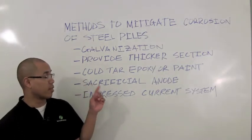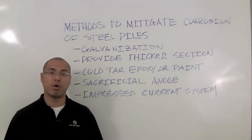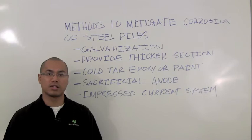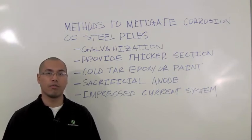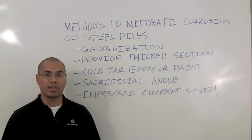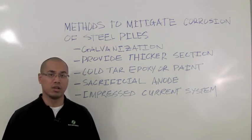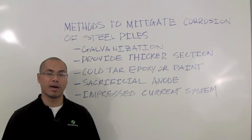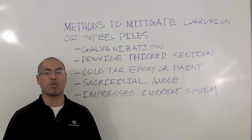The second method is to provide a thicker section than is structurally required. More or less, this method allows the steel piles to corrode over the life of the system and at the end of the shelf life of the system, theoretically, there should be enough section to resist any loads imposed by the tracker or the fixed tilt racking system.